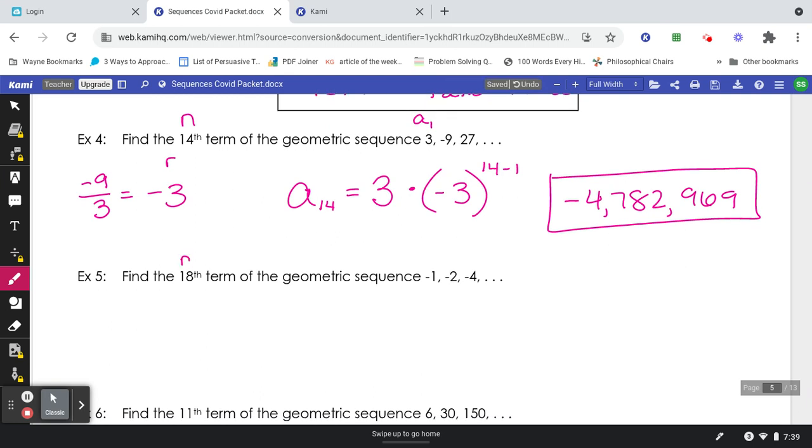Example 5. This time we're looking for the 18th term, n. And our first term is a sub 1. Let's find our common ratio by doing the second term divided by the first term to get 2. That's my r.